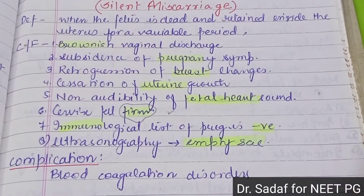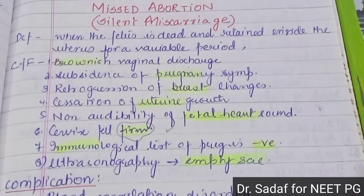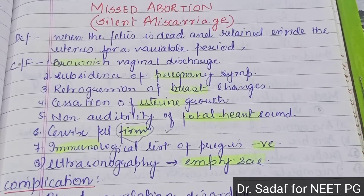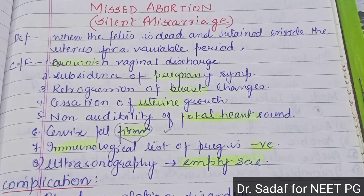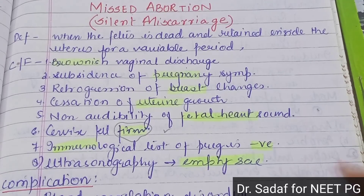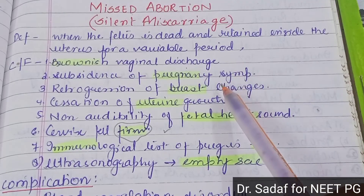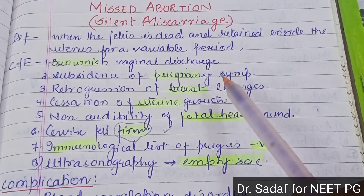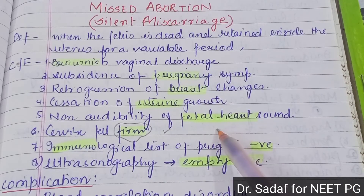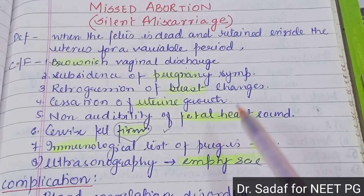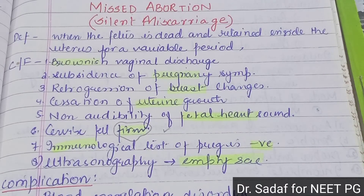To summarize missed abortion: it is also called a silent miscarriage. When the fetus is dead and retained in the uterine cavity for a viable period, we call it missed abortion. The vaginal discharge is brownish in color. General pregnancy symptoms like nausea and vomiting all subside. Breast changes regress. Uterine growth ceases. Fetal heart sound is absent. Cervix feels firm. The immunological pregnancy test will be negative.